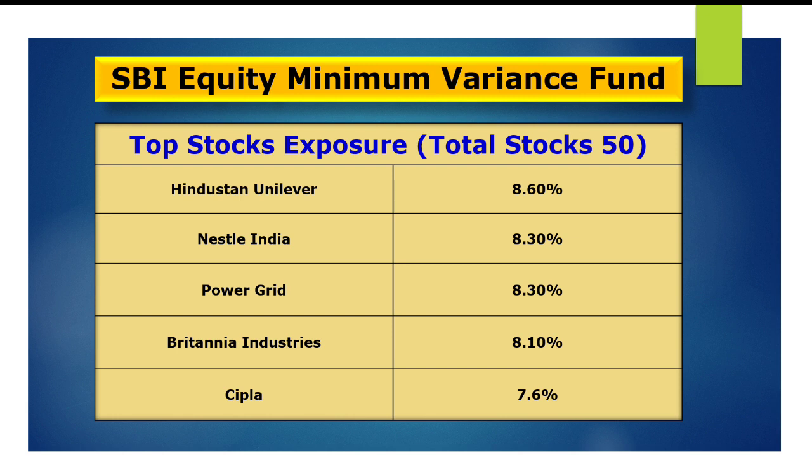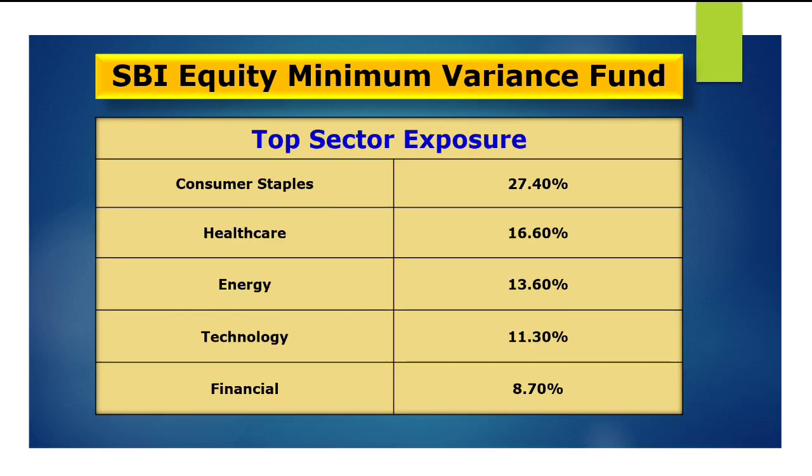Looking at the top stock exposure: Unilever has a weightage of around 8.60 percent, Nestle India around 8.30 percent, Power Grid 8.30 percent, Britannia Industries 8.10 percent, and Cipla around 7.50 percent. For top sector exposure, this fund is more concentrated on consumer industry — consumer staples having around 27 percent weightage, healthcare around 16.5 percent, energy sector around 13.5 percent, IT sector around 11 percent, and financial sector around 9 percent.